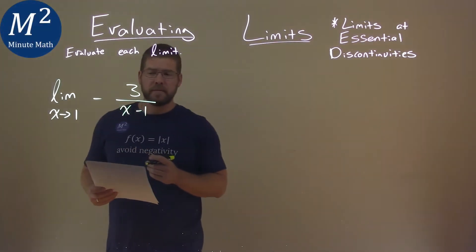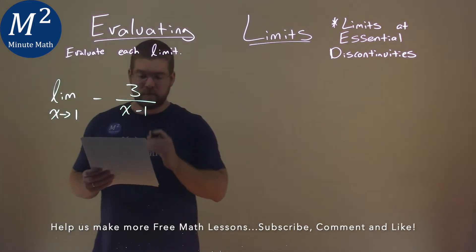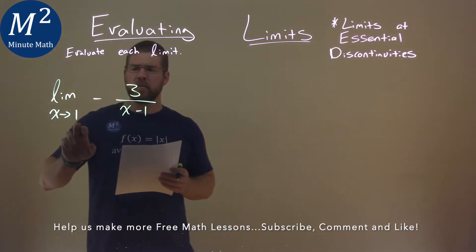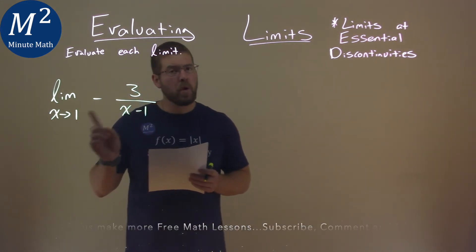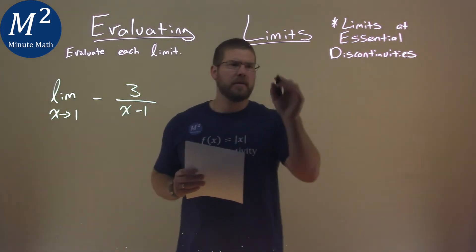We're given this limit: the limit as x approaches 1 of negative 3 over (x minus 1), and we need to evaluate it. Notice we're approaching 1 from both left and right. So let's use a table to see what happens.